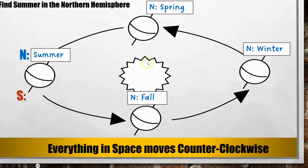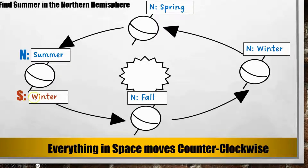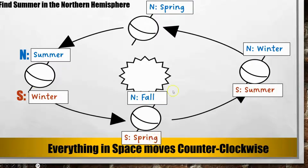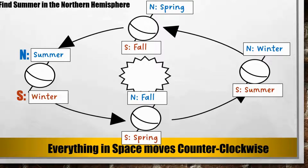Once you have the northern hemisphere labeled, remember that whatever is happening in the north, the opposite is happening in the south. So once we have all our northern seasons written down, we label the southern hemisphere with the opposite seasons. Opposite of summer is winter, and then we just go in order — after winter we have spring, after spring we have summer, and after summer we have fall. Summer will always be opposite of winter, and spring and fall will always be opposite as well.